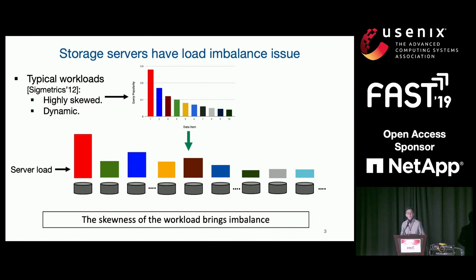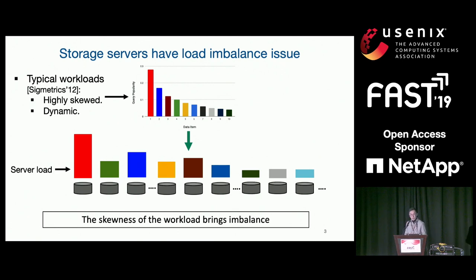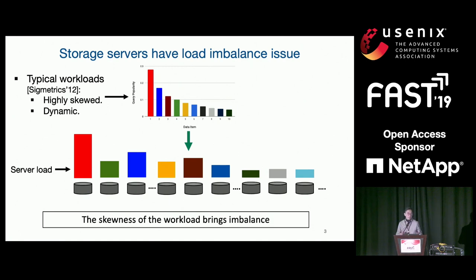However, storage servers have a load imbalance issue. We learned from a paper from Facebook in 2012 at SIGCOMM saying that the typical workloads to their storage clusters have two properties: they are highly skewed and follow some power law distribution, and they are quite dynamic. Highly skewed means only a few items are very popular — they occupy lots of bandwidth. Dynamic means the hot items keep changing.